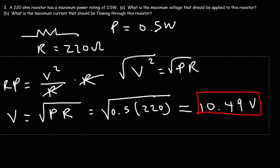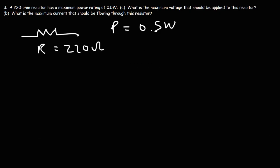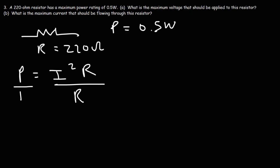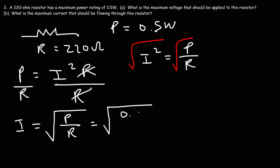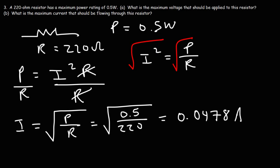Now let's calculate the maximum current that should be flowing through this resistor using P = I²R. Solving for I, we divide both sides by R to get I² = P/R, then take the square root. So the maximum current equals the square root of the maximum power divided by R. With P = 0.5 and R = 220, that's 0.5 divided by 220, which is 0.00227. Taking the square root gives 0.04767 amps.